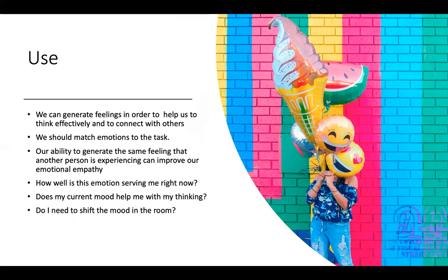The second ability is using emotions. We can actually generate feelings in ourselves and shift our own moods. A very important emotional intelligence skill is being able to match the emotions to the task. If you need to be energized — say you're going to brainstorm with your team — you're looking for high energy and high positivity. So how might we generate those feelings in ourselves and shift our mood to where we need to be? That may be as simple as getting some exercise, going for a walk, reading something uplifting, or even having an amazing stand-up — things we can use to increase our energy levels and emotions.